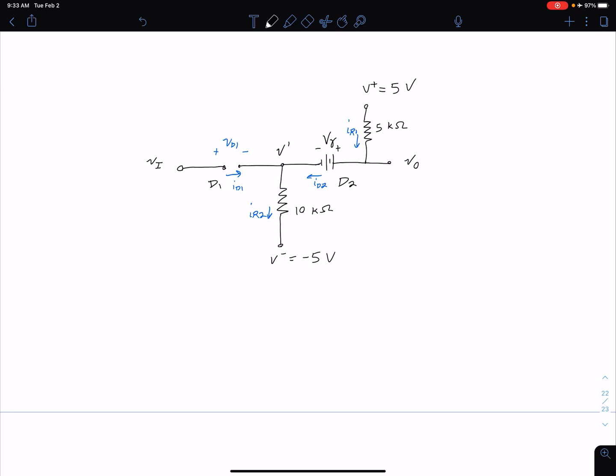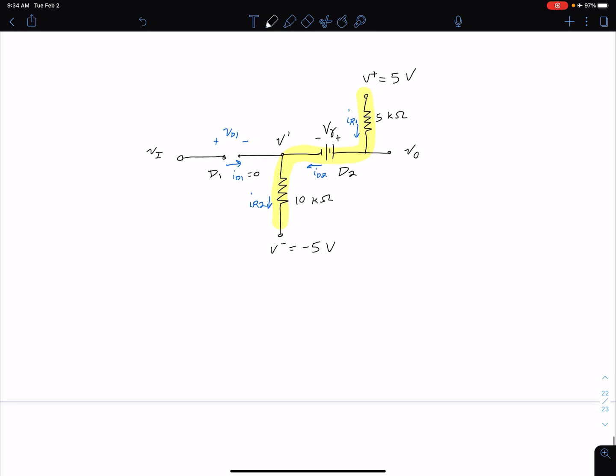Okay so this circuit now of course is a lot easier to analyze because we see there's no current, so this I_D1 equals zero, which basically means we only have one path for current flow that looks like this. So what we can do is just a KVL equation.